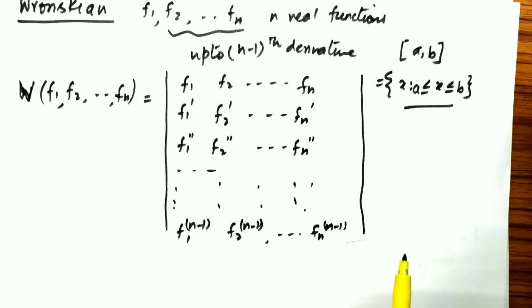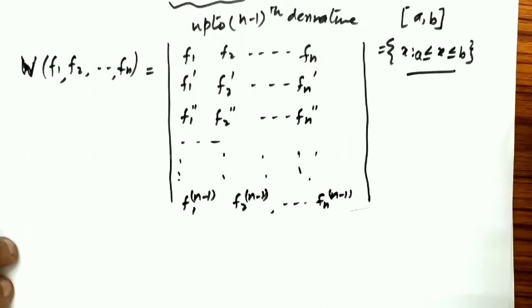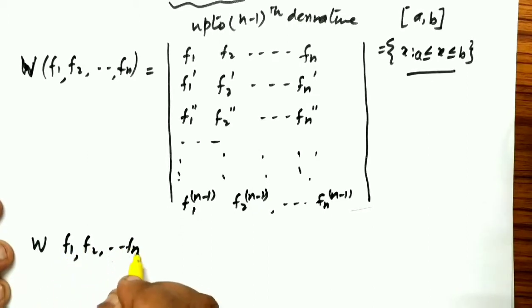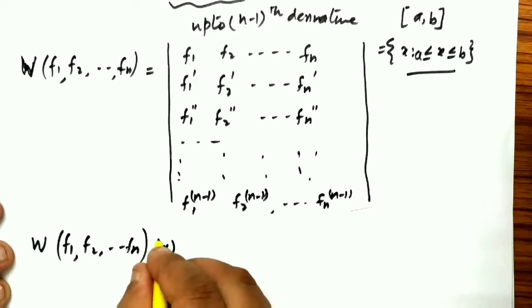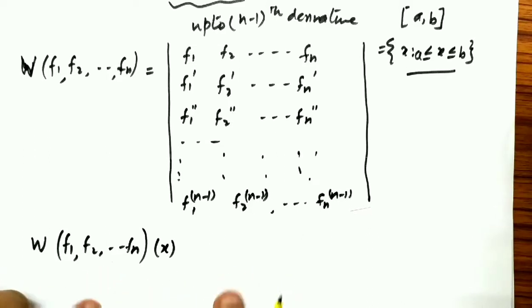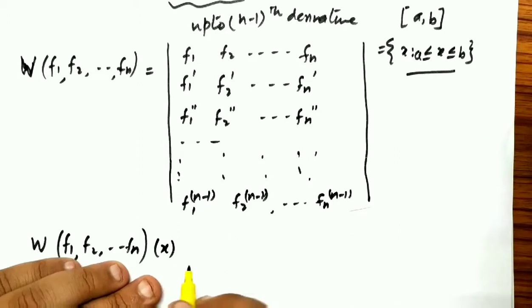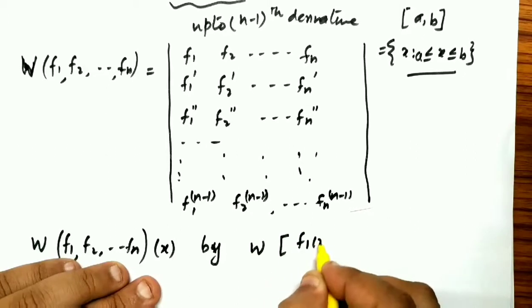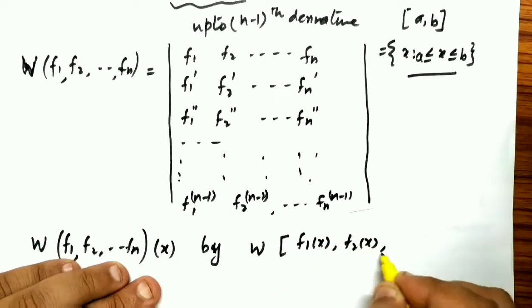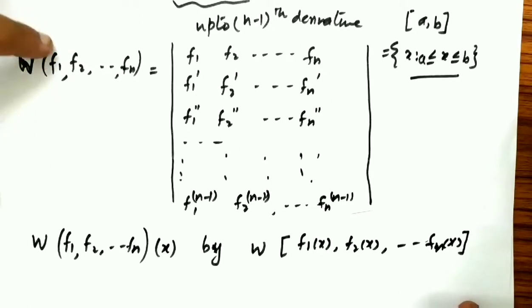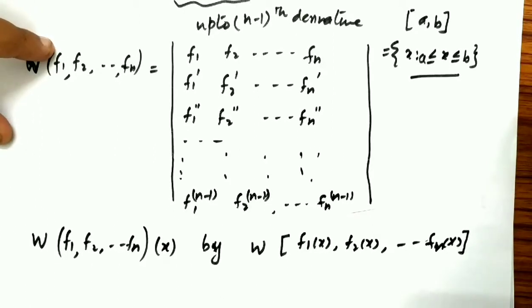This is an n×n determinant. We observe that the Wronskian W evaluated at a point x can be denoted W(F1(x), F2(x), ..., Fn(x)), where we substitute x into all entries. We will do examples to see how to calculate the Wronskian when two, three, and four functions are given.